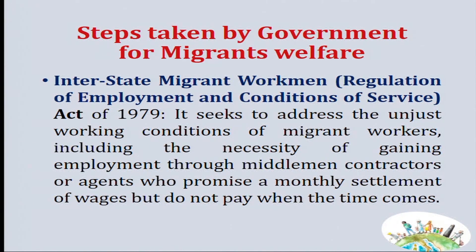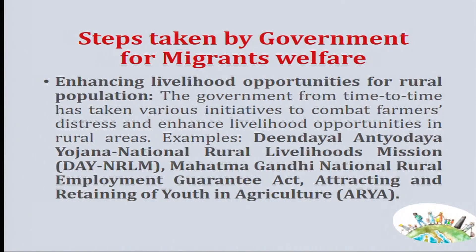These are some of the challenges faced by migrant workers. Moving on to steps taken by the government for migrants' welfare: the government came up with the Interstate Migrant Workmen Regulation of Employment and Conditions of Service Act in 1979. But how much it is being implemented is a big question mark, because agents who bring them are supposed to give them an identity card but they do not. There are lots of challenges in the implementation of this act. The government also introduced livelihood opportunities for rural populations like the Deendayal Antyodaya Yojana, National Rural Livelihoods Mission, Mahatma Gandhi National Rural Employment Guarantee Act (MGNREGA), and schemes attracting and retaining youth in agriculture.